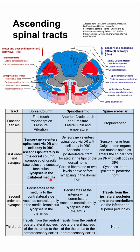The second order neuron decussates at the medulla to the contralateral side. It ascends contralaterally in the medial lemniscus and synapses in the thalamus. Finally, the third order neuron travels from the ventral posterior nucleus of the thalamus to the somatosensory cortex.